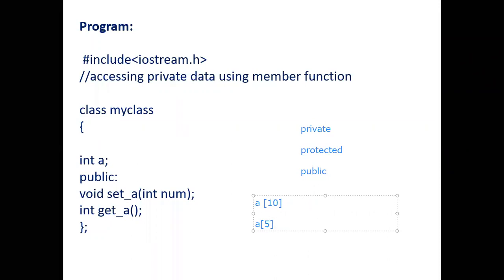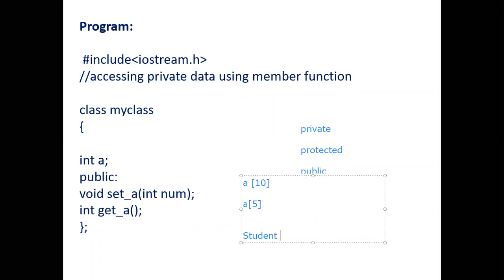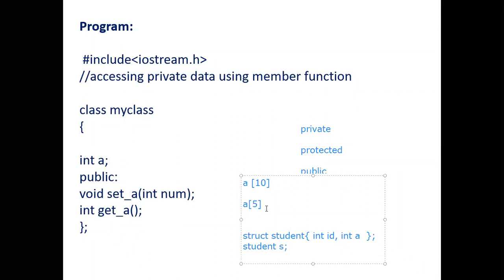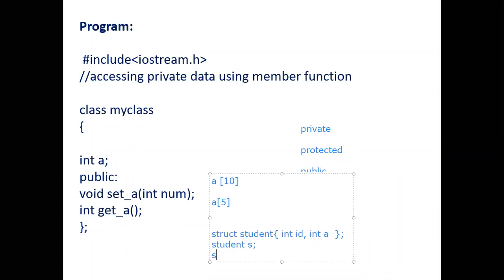In case of a structure, let's assume I have a structure called student. The syntax is 'struct student' and in the structure I have integer id and integer a. If I have a variable s of that structure, to access the variables from the main function I write s.id — in that way I can access the information.